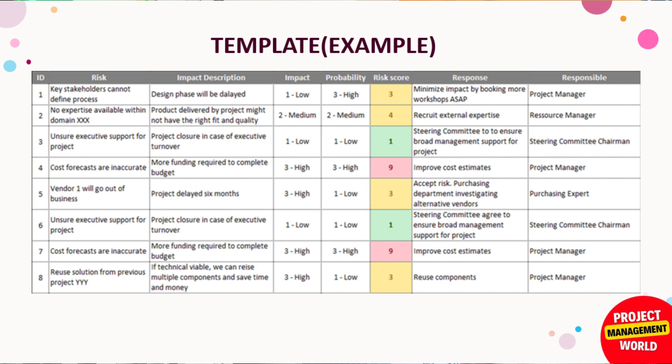Next we come to the qualitative risk analysis columns: impact, probability, and risk score. Based on expert judgment, we assign impact and probability ratings for each risk — for example, one is low, three is high. Multiplying probability by impact gives us the risk score. Then we have the planned response column, and finally we assign an owner to each risk.